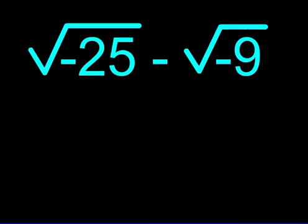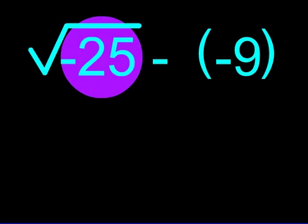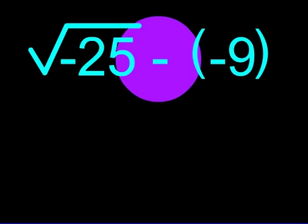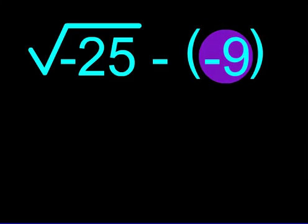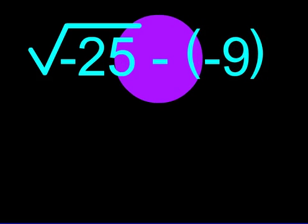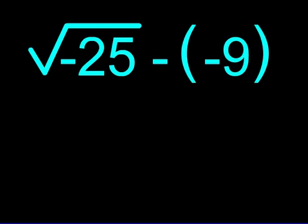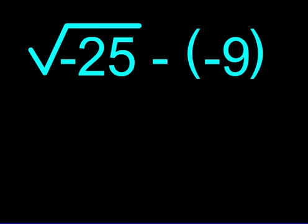Let's change things around. Suppose we wanted to solve the square root of negative 25 minus negative 9. We see a negative 9 in parentheses and a negative sign outside the parentheses.